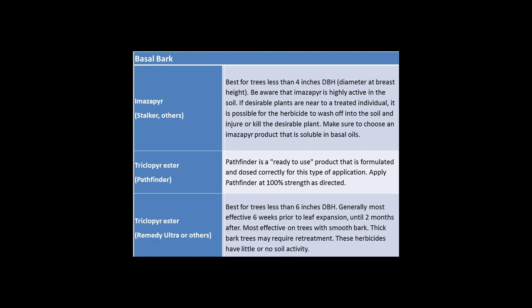Herbicides to use for basal bark — these are all oil-based herbicides, mixed with basal bark oil or diesel unless they come ready to use. Best for trees less than four inches in DBH. Stocker is one option. Pathfinder comes as a ready-to-use product, so you wouldn't need to mix it. Torridon is the same — it comes ready to use. And there's also triclopyr, which would be Garlon 4, Remedy Ultra, or several others.